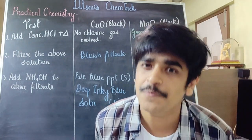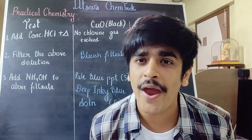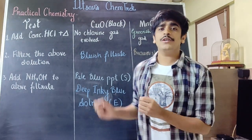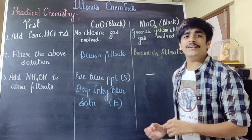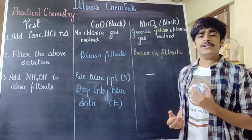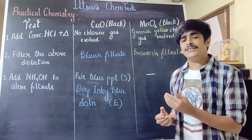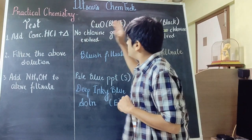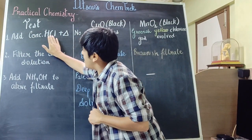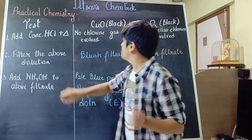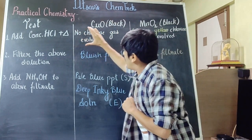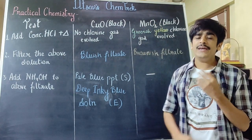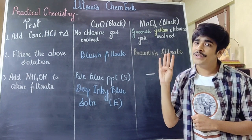Let's start with the last part of this chapter, where we differentiate between two solids. The first one is copper oxide and the second one is manganese dioxide. Both these solids are black in colour. To both of the solids, we are going to add concentrated HCl and supply heat energy. In the case of copper oxide, no gas is evolved. However, in the case of manganese dioxide, we get the liberation of greenish yellow chlorine gas.